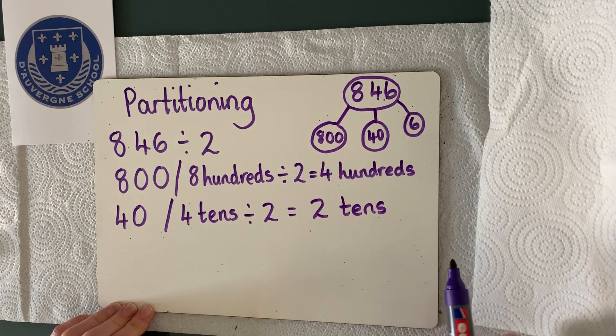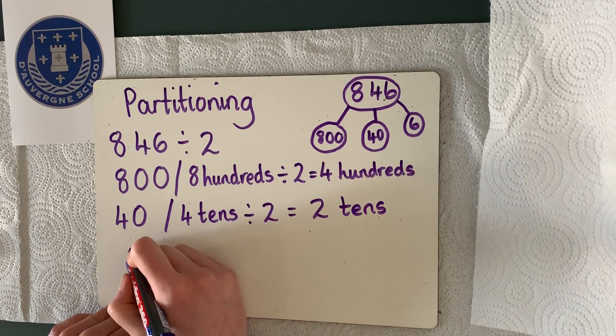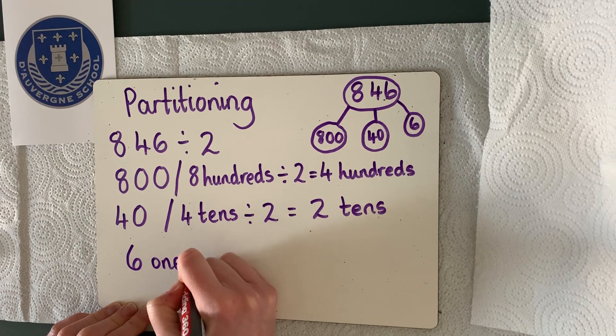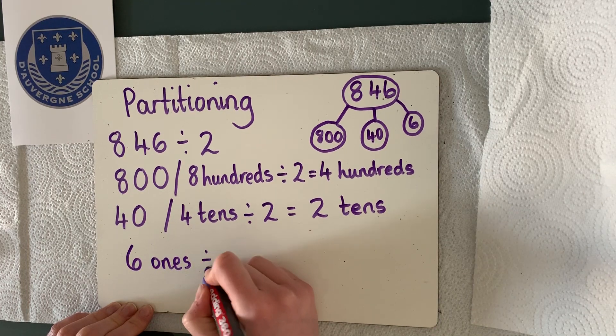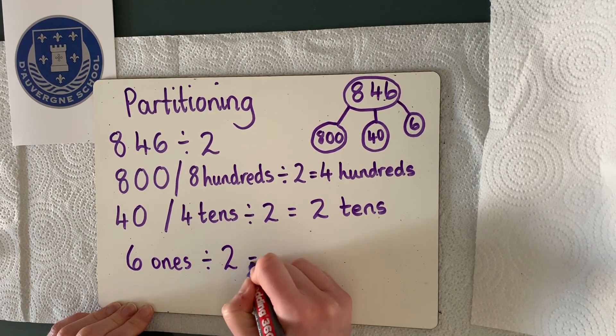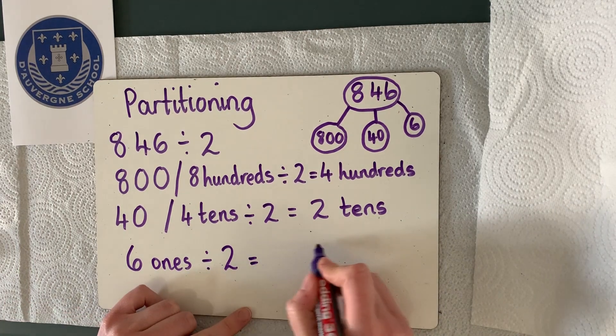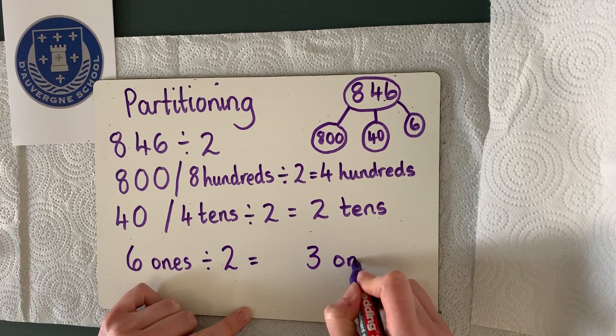And the last column we have to deal with is our ones. So we've got 6 in our ones. So if we're doing 6 ones divided by 2, we know that 6 divided by 2 is 3. So our answer is 3 ones.